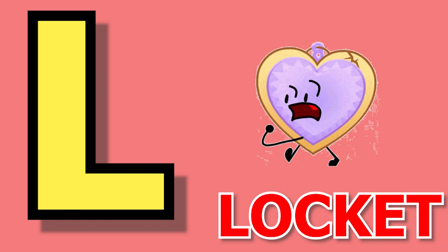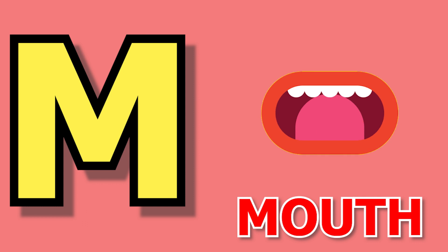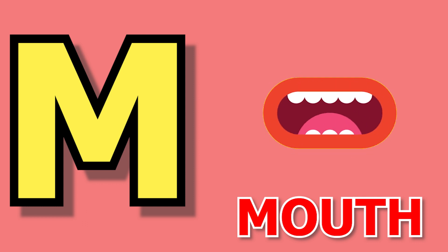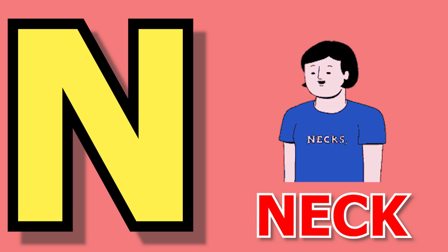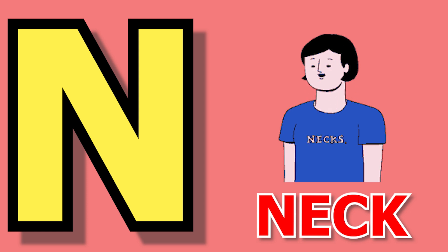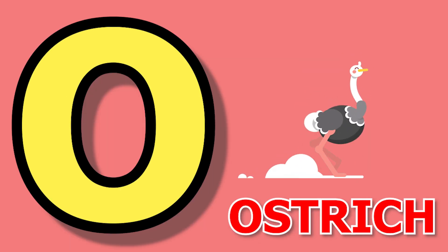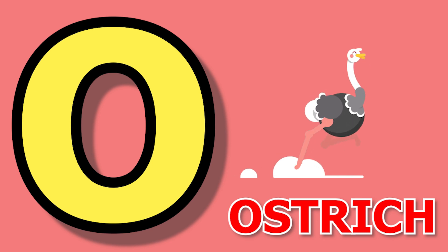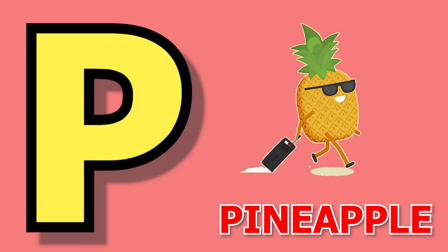M for mouth, mouth means moo. N for neck, neck means garden. O for ostrich, ostrich means ostrich. P for pineapple, pineapple means ananas.